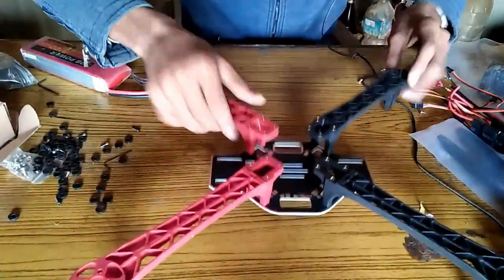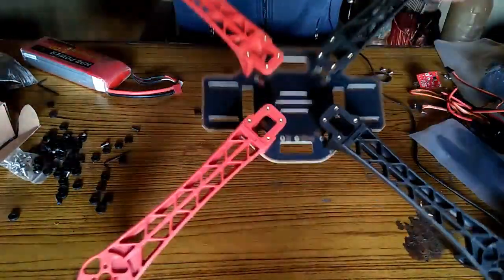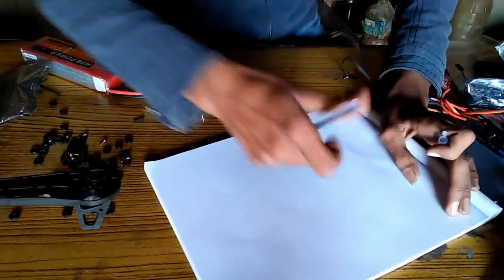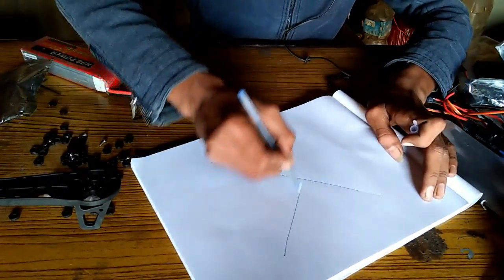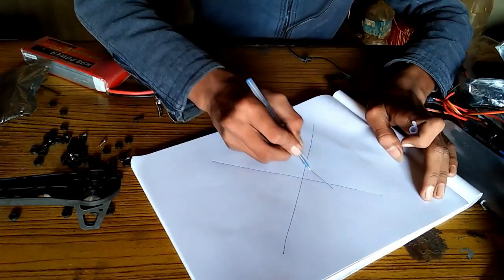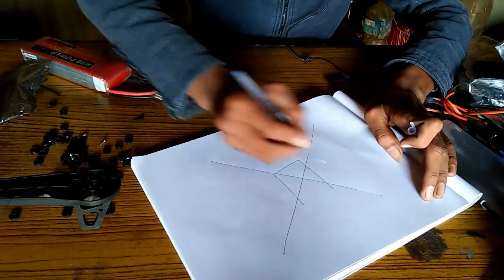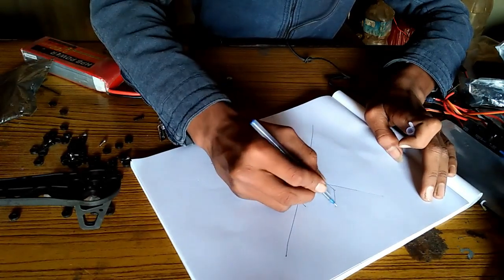And this is my frame. This is DJI F450 frame. I will be using X frame. Here I will place the ArduCopter or Pixhawk as APM. So this will be the heading, this will be the heading.